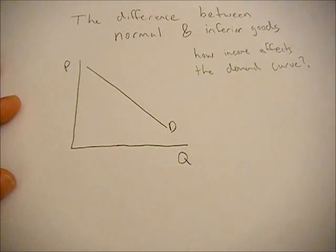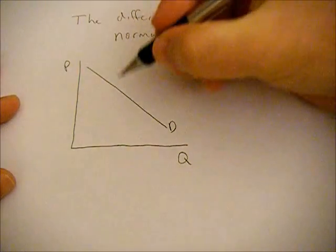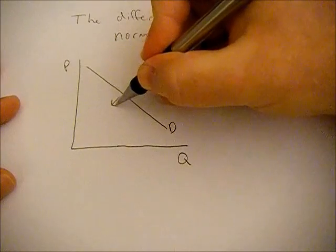So with an inferior good, you're saying that the good is inferior, meaning that if your income goes up, you're going to see a decrease in demand.